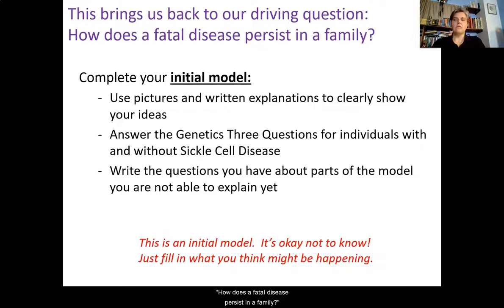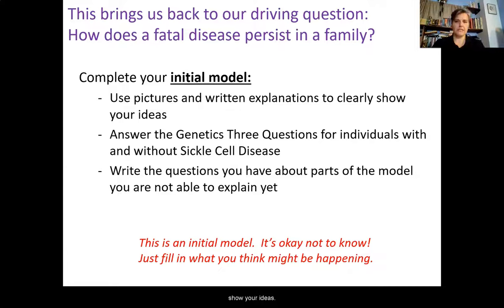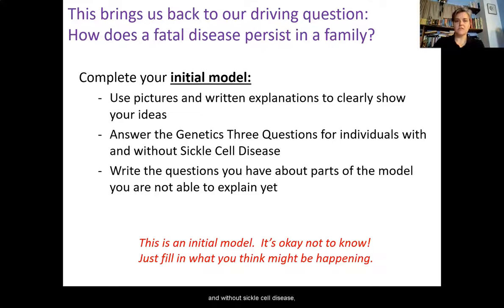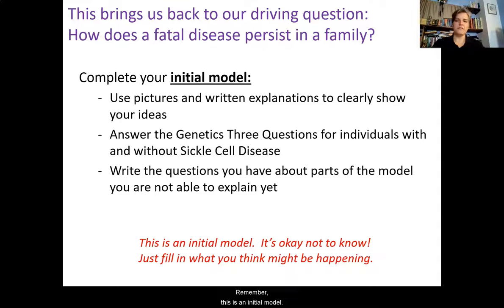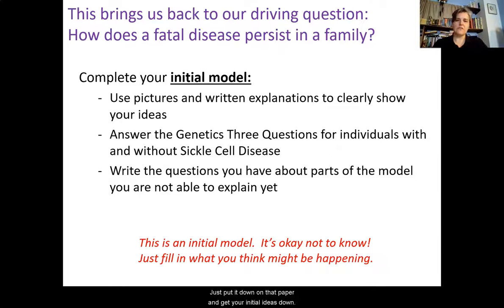Back to the driving question — how does a fatal disease persist in a family? You're going to complete an initial model using pictures and written explanations to clearly show your ideas. Answer the genetics three questions for individuals with and without sickle cell disease, and write questions you have about parts of the model you're not yet able to explain. Remember, this is an initial model — it's okay to not know. Just fill in what you think might be happening based on what you've learned.